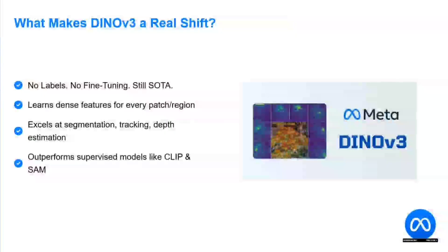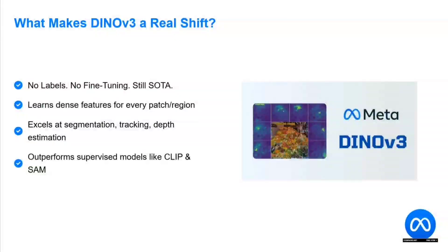It does not use labels. It doesn't require fine-tuning and is still state-of-the-art. You can directly use it for different tasks and it will work. It learns dense features from every patch — so rather than just saying this is a cat, it can say it's a striped cat with brown fur at the back, white fur at the front, etc. It excels at segmentation, tracking, and depth estimation, and outperforms models like CLIP and SAM.